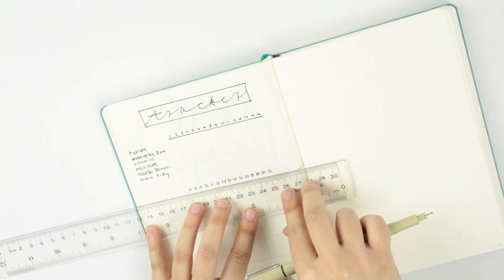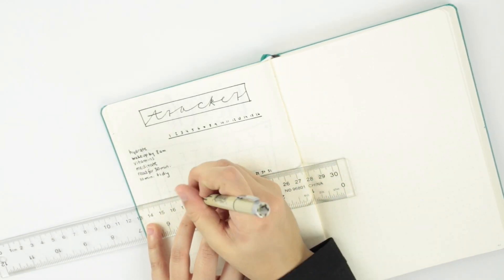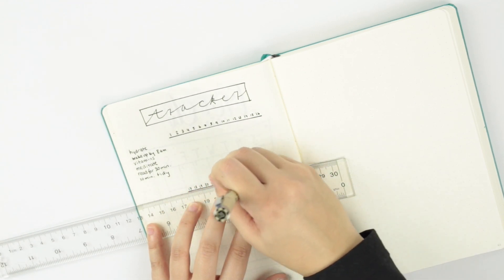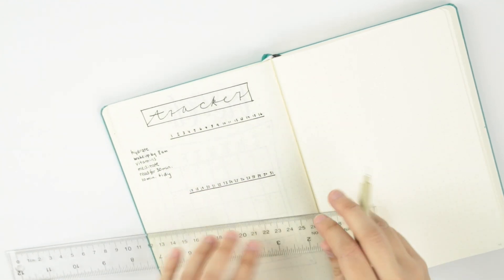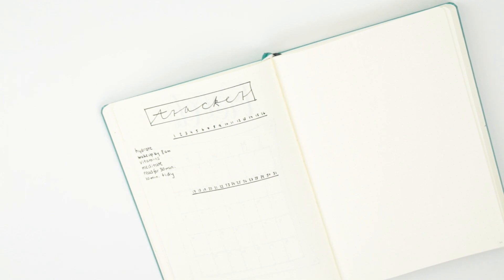Moving on to the monthly tracker. If you're a regular watcher of my plan with mes, you know that this month I am significantly shortening the amount of items I am tracking because March is a super busy month for me.